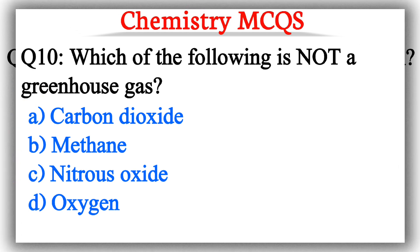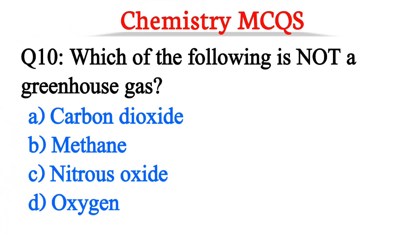Question number 10. Which of the following is not a greenhouse gas? The correct option is option D, Oxygen.